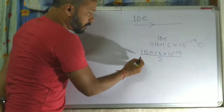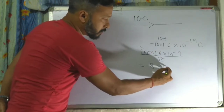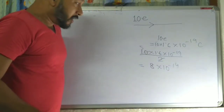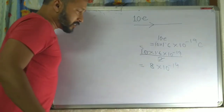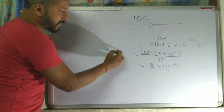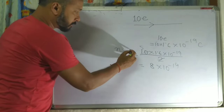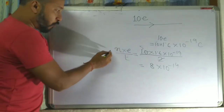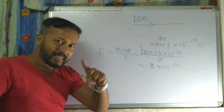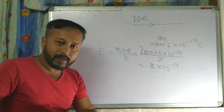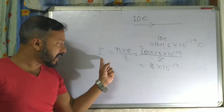If you calculate it, you get 5 into 1.6, that is 8 into 10 to the power minus 19. We will call this the amount of current passing through that wire. So what we have done here: N is the number of electrons, E is the charge of one electron, divided by time T. This is the formula for current: I = NE/T.